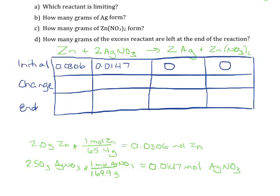Our reactants will have negative changes because we decrease the amount. So minus x for zinc because it has a coefficient of 1, so it's going to decrease by a factor of 1. Minus 2x for the silver nitrate because it's going to decrease twice as fast — we consume the silver nitrate twice as fast as we consume the zinc. The solid silver is going to form at a rate of 2x, while the zinc nitrate forms at a rate of just x.